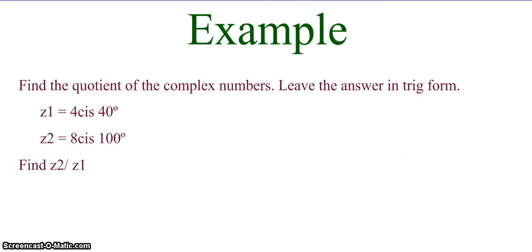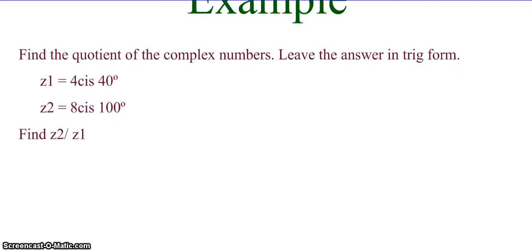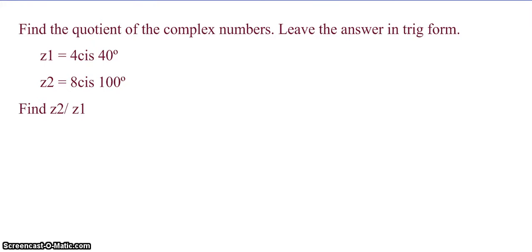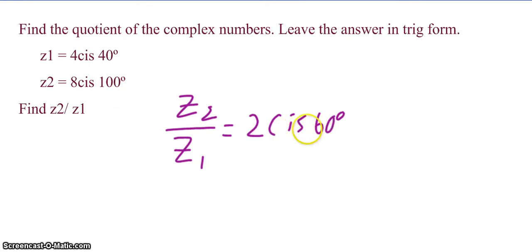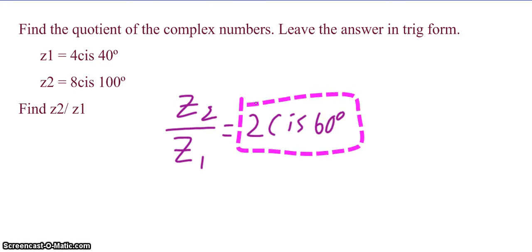Pause the video, find the quotient of the complex numbers, leave the answer in trig form, and unpause when you're ready to check your work. z2 over z1 is 8 divided by 4, which is 2, times cosine of 100 minus 40 — which is 60 — plus i sine of 100 minus 40, so 60. Our answer is 2 cis 60.